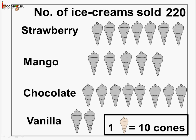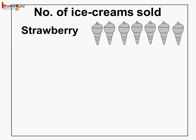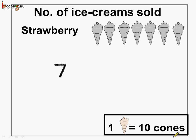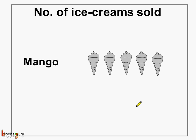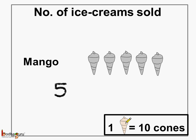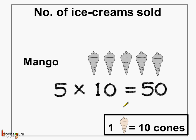Let us see how many ice creams were sold of each flavor. How many strawberry ice creams were sold that day? One, two, three, four, five, six, seven cones are there. Each cone represents 10 ice creams, so 7 multiplied by 10 equals 70 — so 70 people bought strawberry ice creams that day. Next, how many people bought mango ice cream? 5 multiplied by 10 is equal to 50, so 50 people bought mango ice cream.